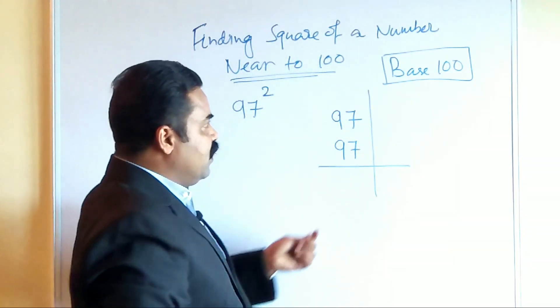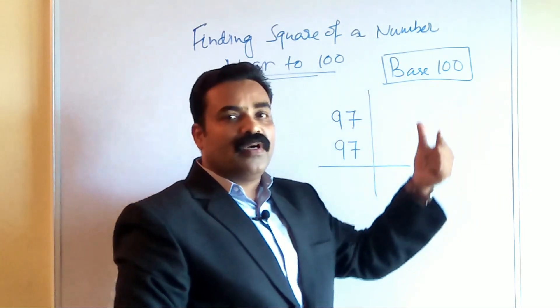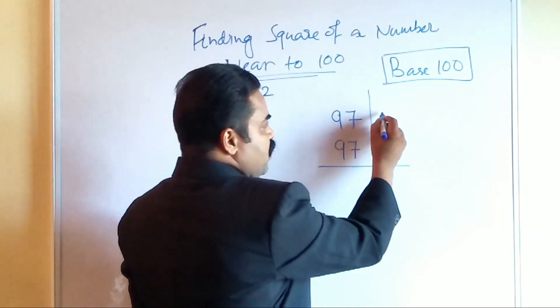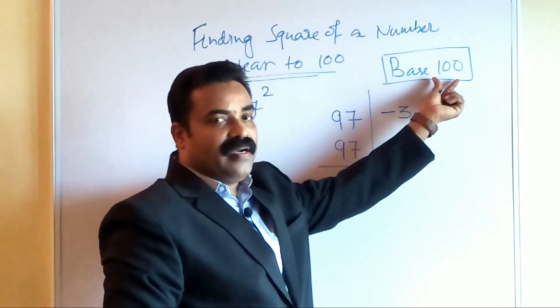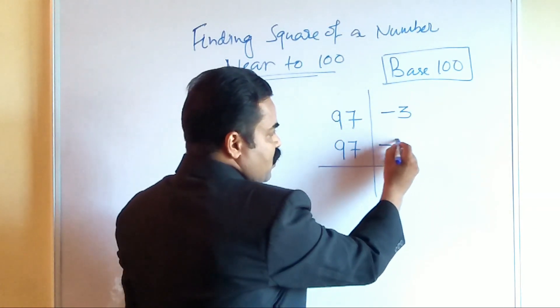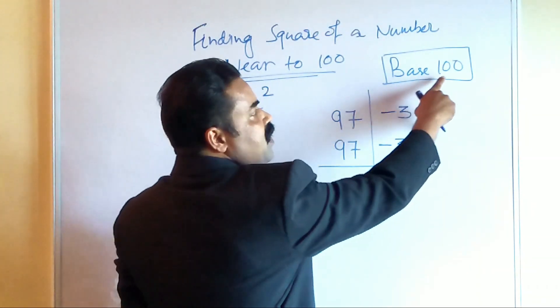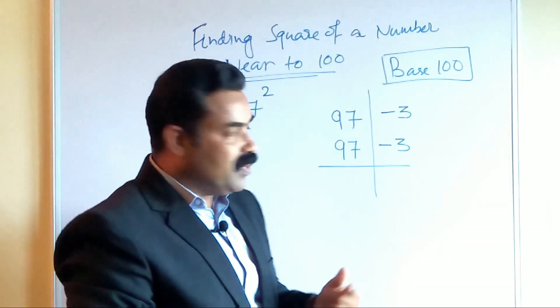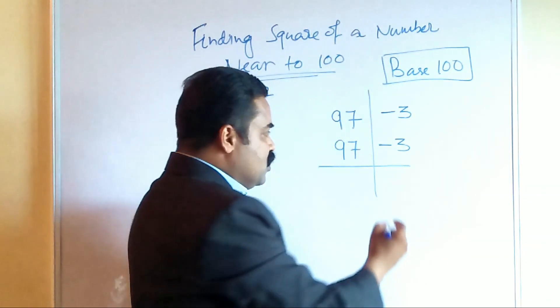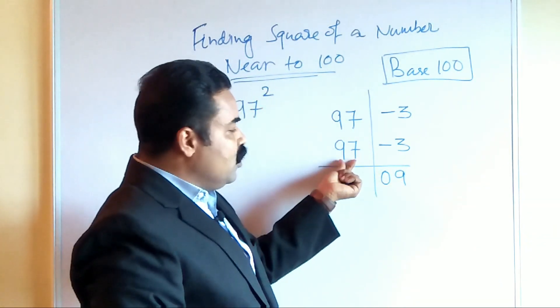Then we will put a line like here. Then 97 is deviated from 100 by minus 3, so we will put that minus 3 here. Again 97 is deviated from 100 by minus 3, so minus 3 is here. Then 3 times 3 is 9. Since the base number has two zeros, we will write the answer here as a two digit number, so 3 times 3 is 9, so we will write 09 here.